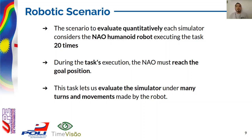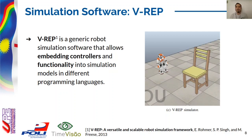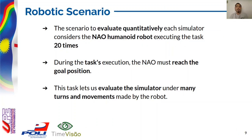To evaluate the simulator requirements, we chose the NAO humanoid robot to perform a navigation task where it must reach a goal position. It must avoid an obstacle in between. This task was executed 20 times for each simulator in order to obtain statistical measurements. During the task execution, the NAO must go around a chair, which is considered the obstacle to reach the goal position, as can be seen in the image. This task lets us evaluate the simulator under many terms and movements made by the robot. In this way, we can measure the workload required by each simulator in terms of CPU, memory footprint, and disk use.